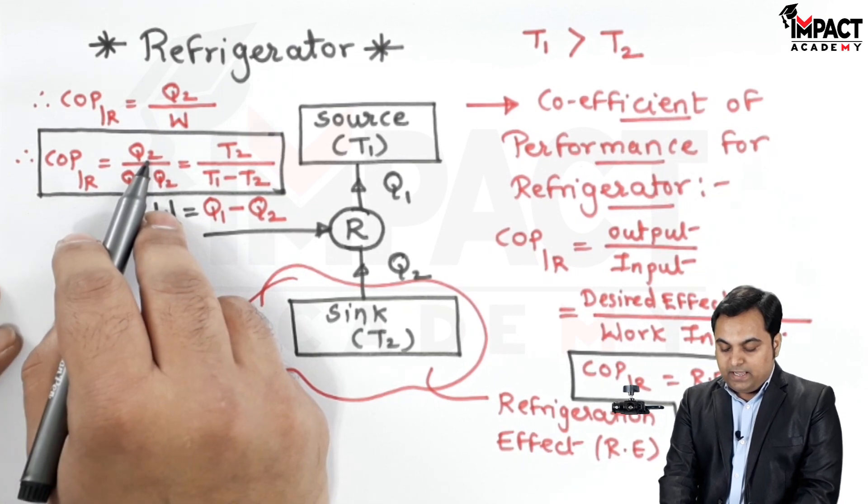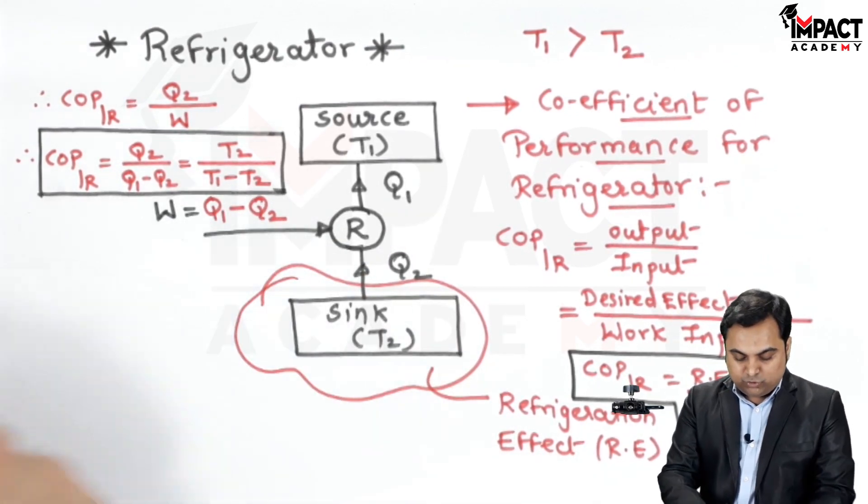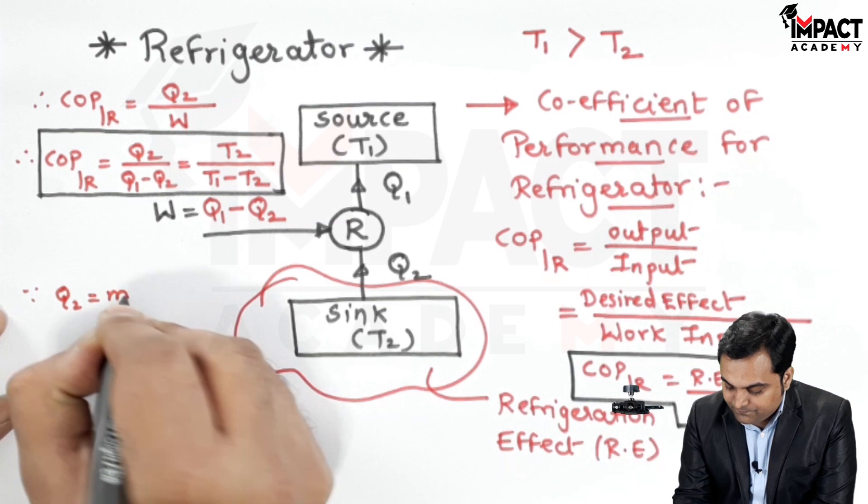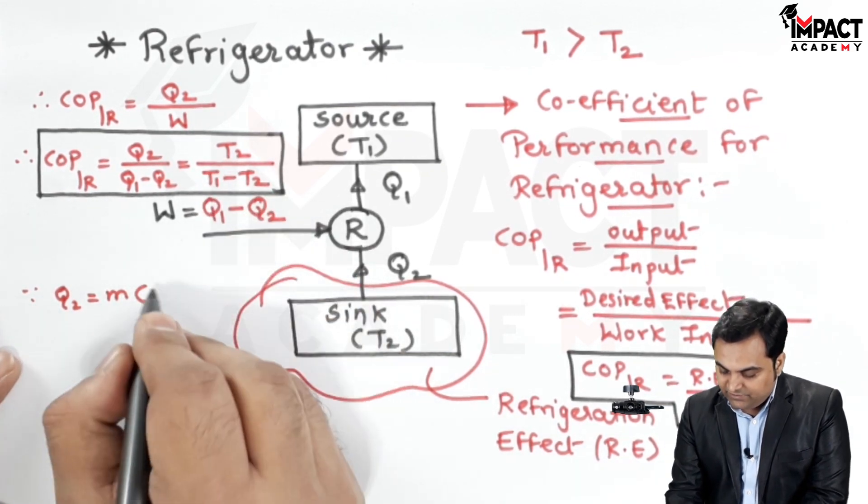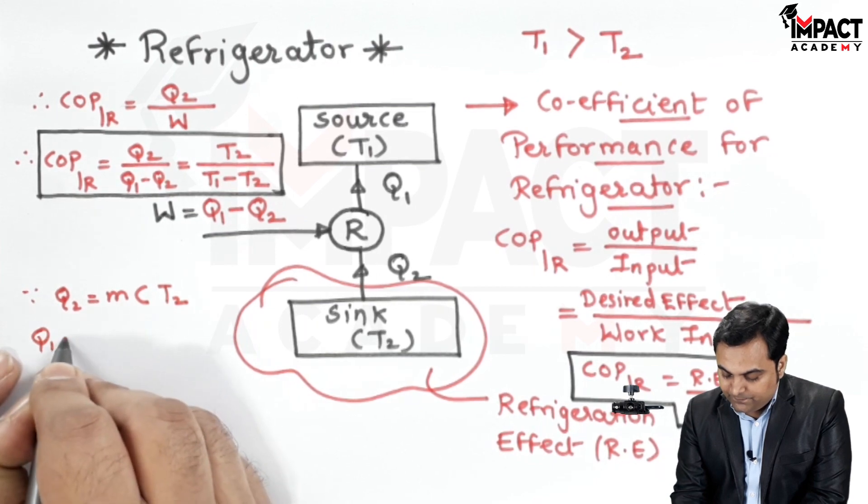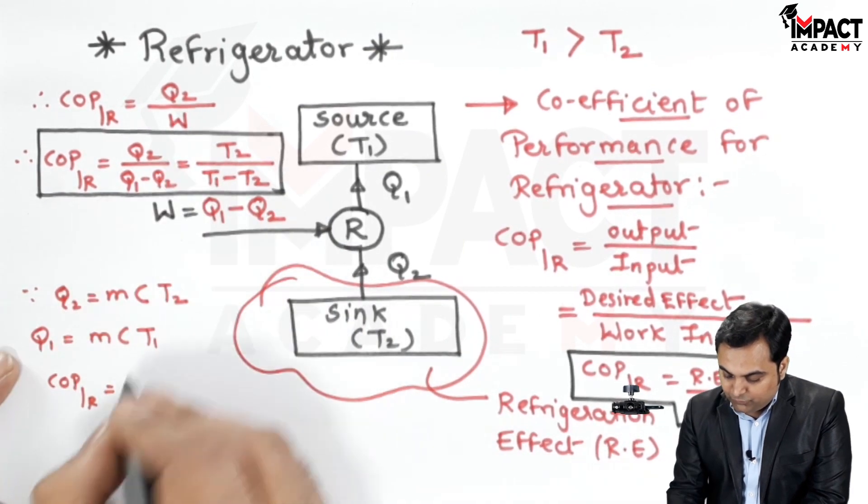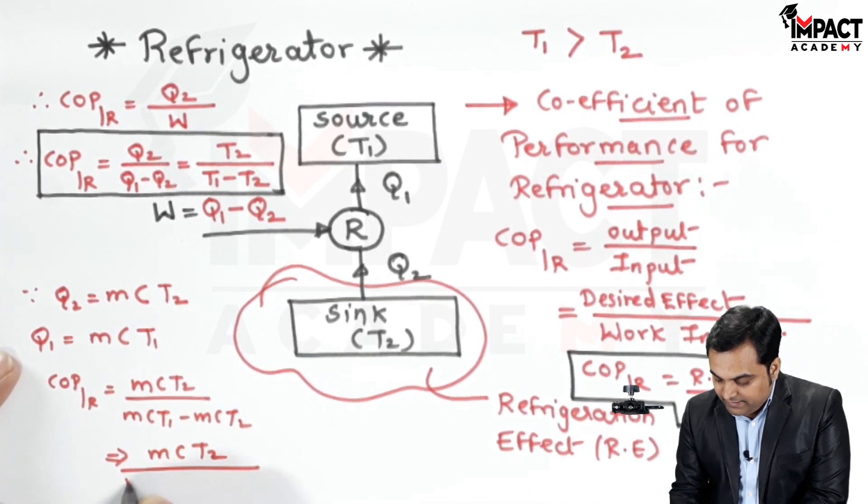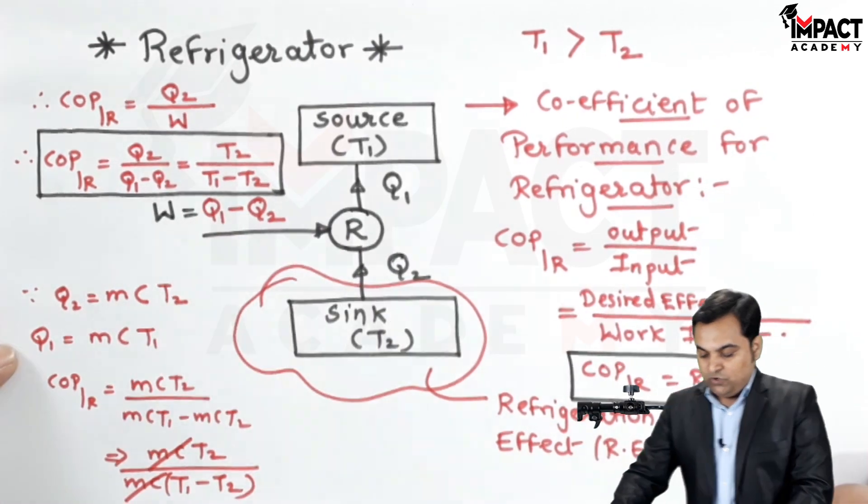How do we replace the terms in terms of heat with terms in temperature? Because heat is given by the formula Q2 equals M C T2, where C is the specific heat for the refrigerant. Similarly Q1 would be M C T1. When I put the values, COP would be M C T2 in the numerator, M C T1 minus M C T2 in the denominator. M C is common, so it becomes T2 divided by T1 minus T2. After the cancellation I am getting the same result as shown.